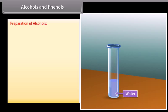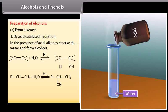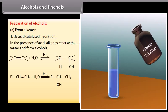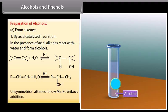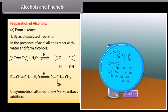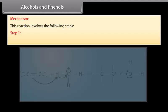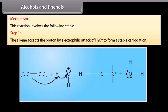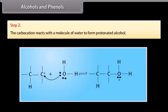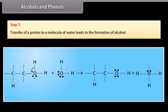Preparation of alcohols from alkenes: by acid-catalyzed hydration. In the presence of acid, alkenes react with water to form alcohols. Unsymmetrical alkenes follow Markovnikov's addition. The mechanism involves three steps: Step 1 — the alkene accepts a proton by electrophilic attack of the hydronium ion to form a stable carbocation. Step 2 — the carbocation reacts with a molecule of water to form protonated alcohol. Step 3 — transfer of a proton to a molecule of water leads to formation of the alcohol.